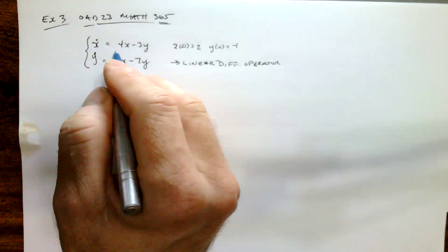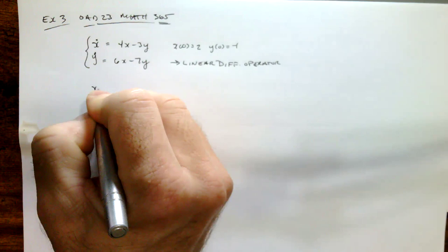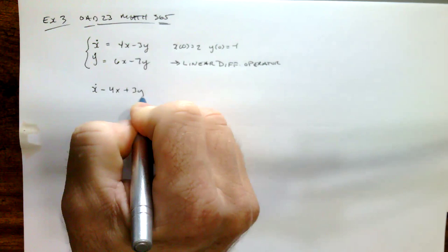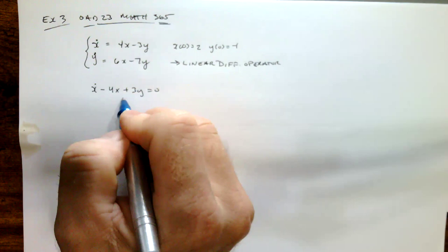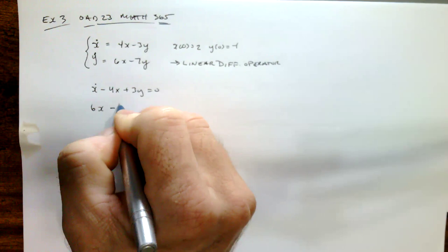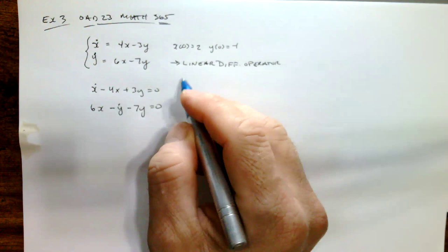We need to do a little bit of work here on the two equations. Note that I can write x-dot minus 4x plus 3y equals 0, just moving everything over. And likewise, I can write the second equation as 6x minus y-dot minus 7y equals 0. That's important for us to be able to write this system.